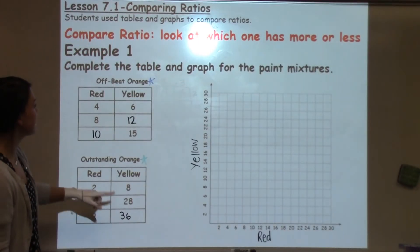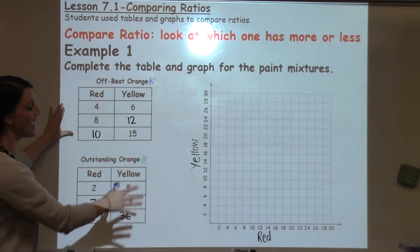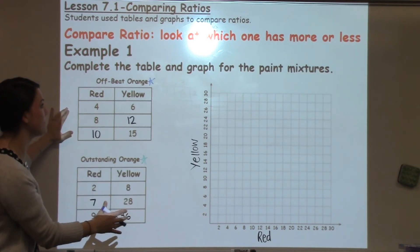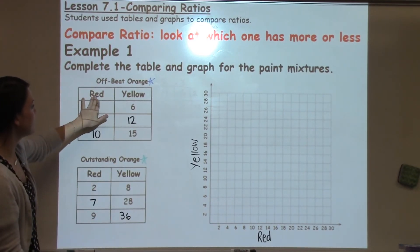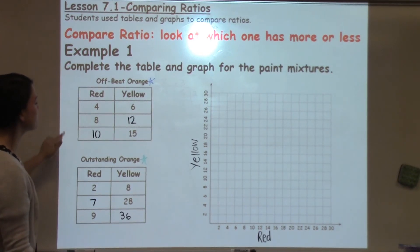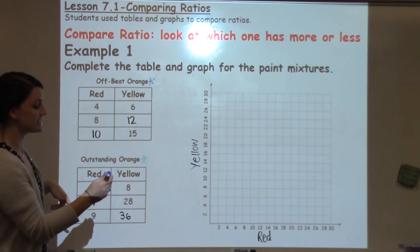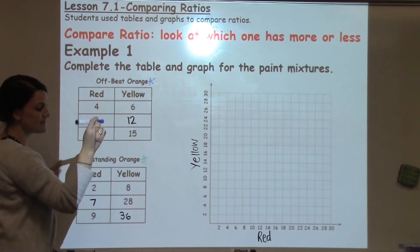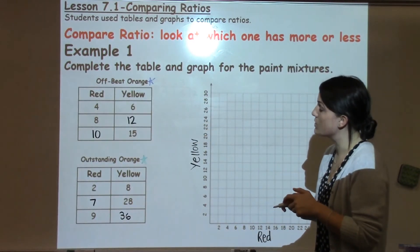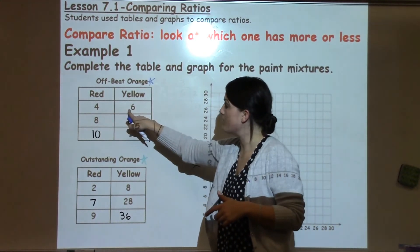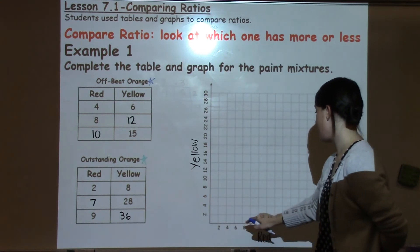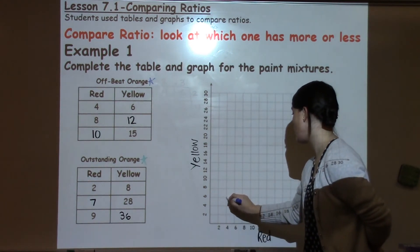Now we're going to take the information that we have from the table and put it into a graph to give us a more visual interpretation of what's happening with the ratio of red paint to yellow paint in each of these different orange paints. So the first one is offbeat orange, and I colored it blue because I'm going to create my graph or my number line with blue for offbeat orange. So I'm just going to simply graph the point for 6. Got over 4 for red, up 6. I'm going to place a point there.